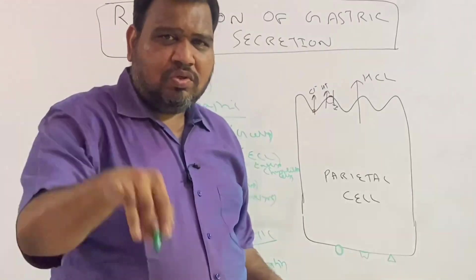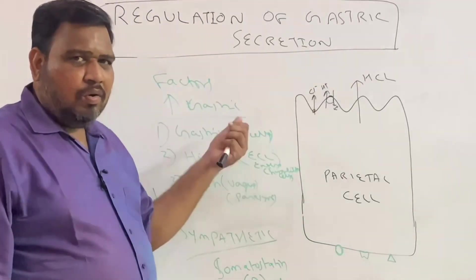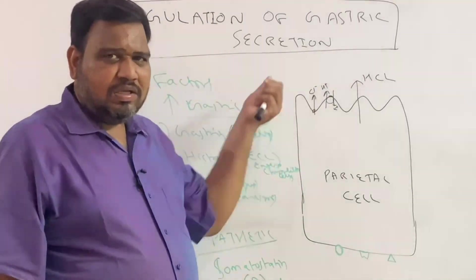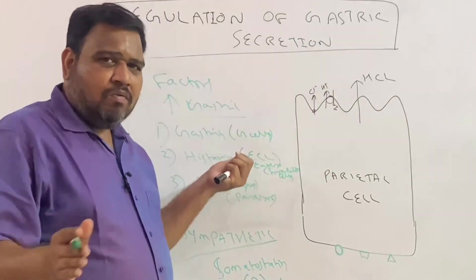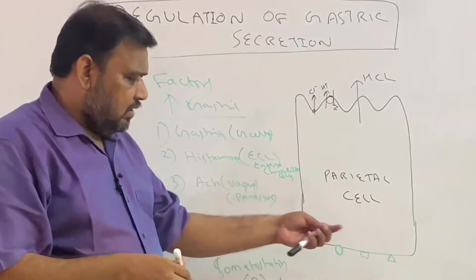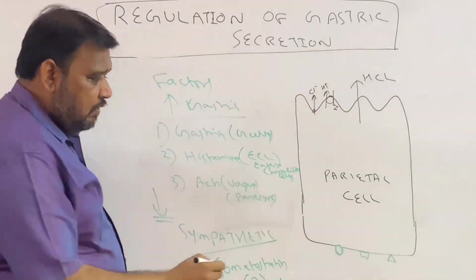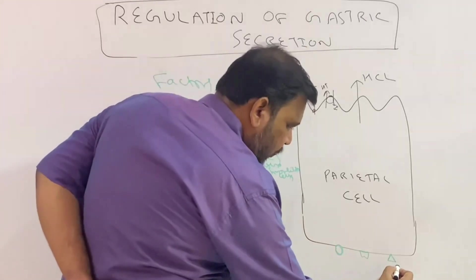Now the next question is: how do these factors act on the parietal cell and on what receptors do they act to increase acid secretion? I have drawn this here. Let me label them one, two, and three for understanding.